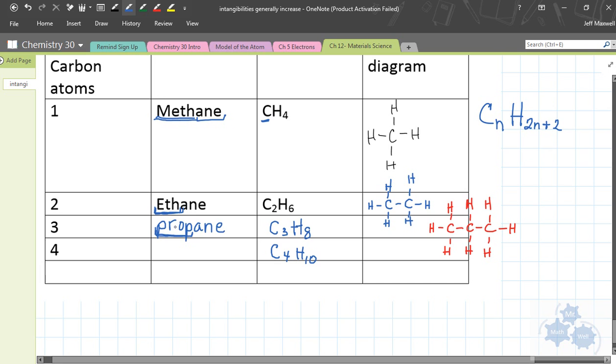So you've heard of maybe butane as well, like they have those little butane lighters. Just a different hydrocarbon that's burning inside those butane lighters. C4H10. So I'll let you guys make that C4H10. Count them up: one, two, three, four carbons, and one, two, three, four, five, six, seven, eight, nine, ten hydrogens.